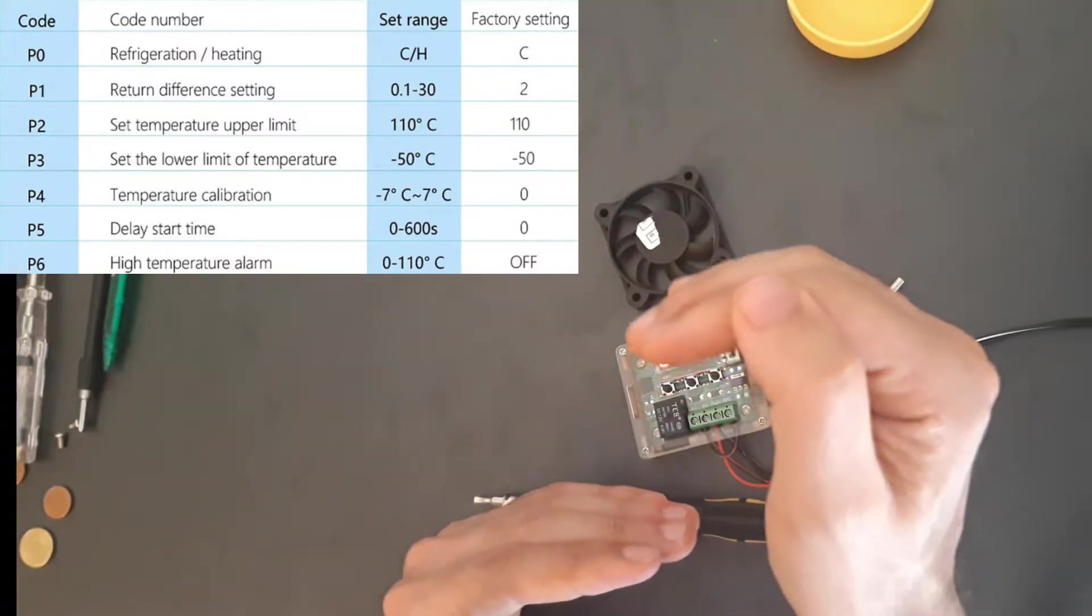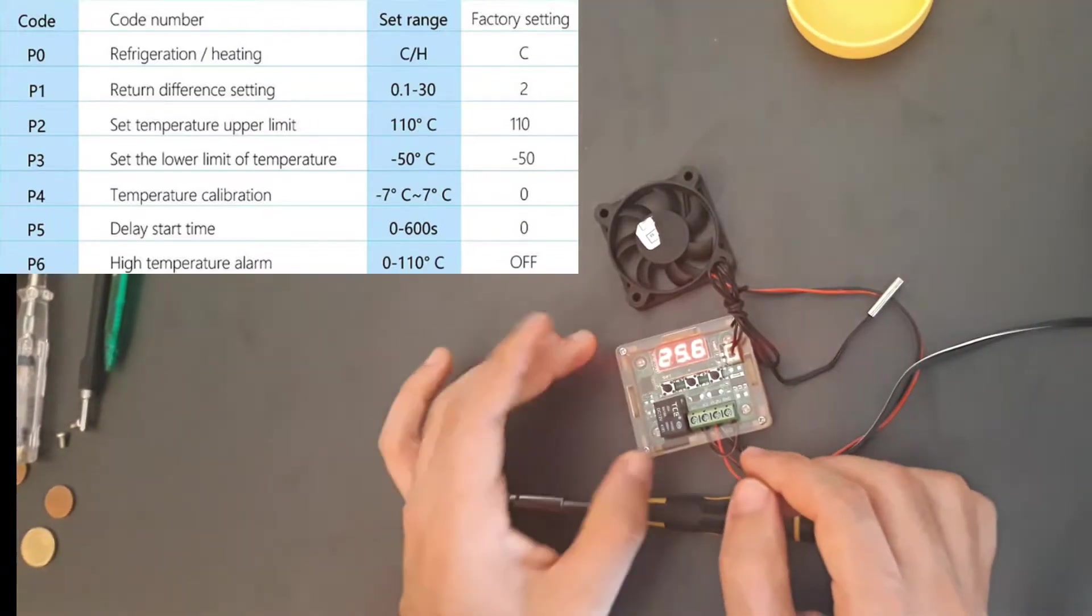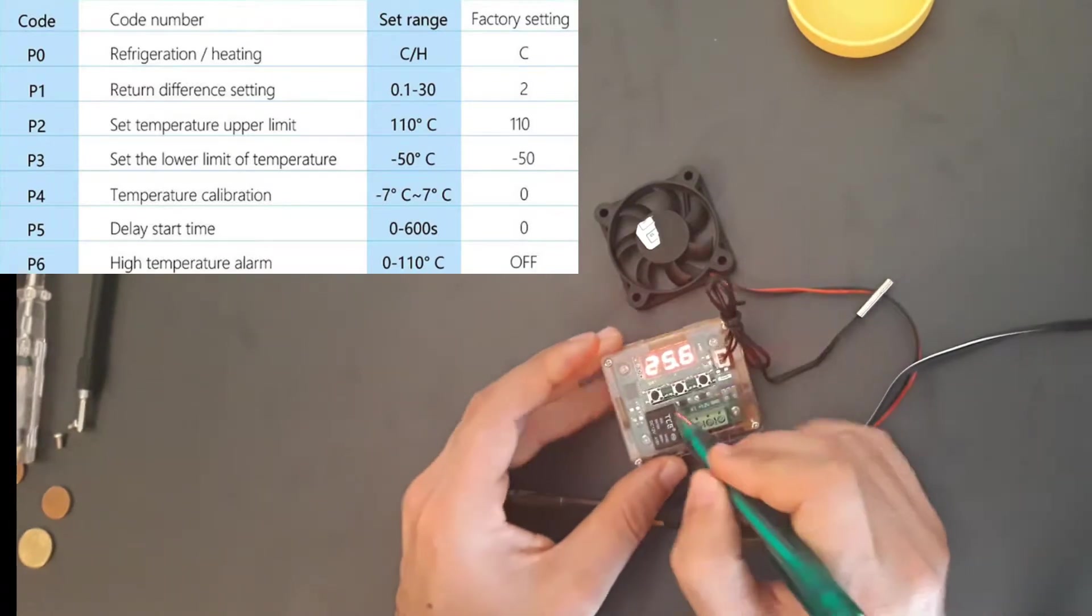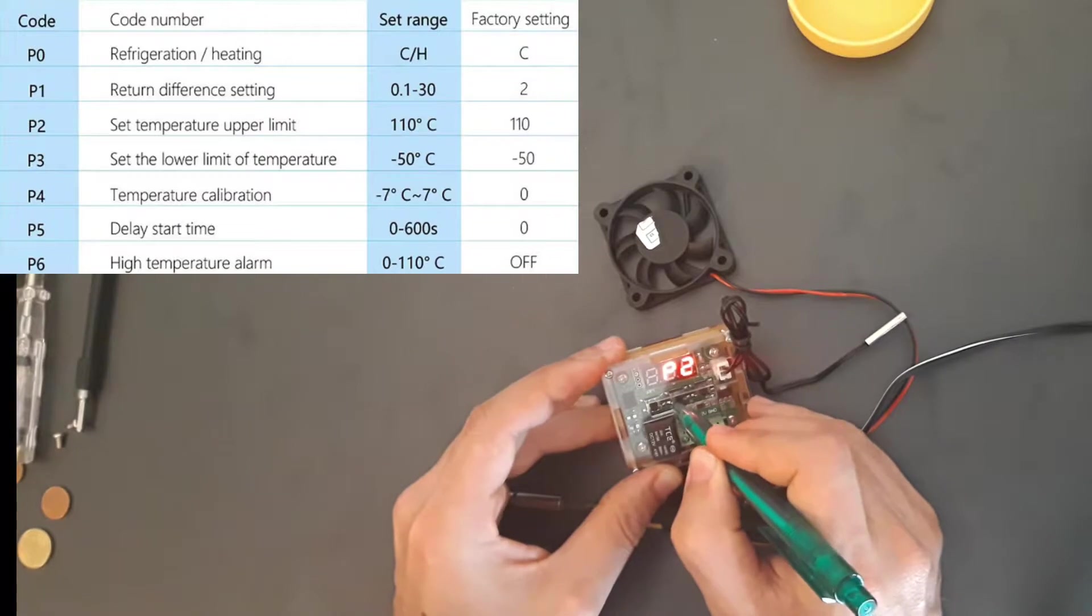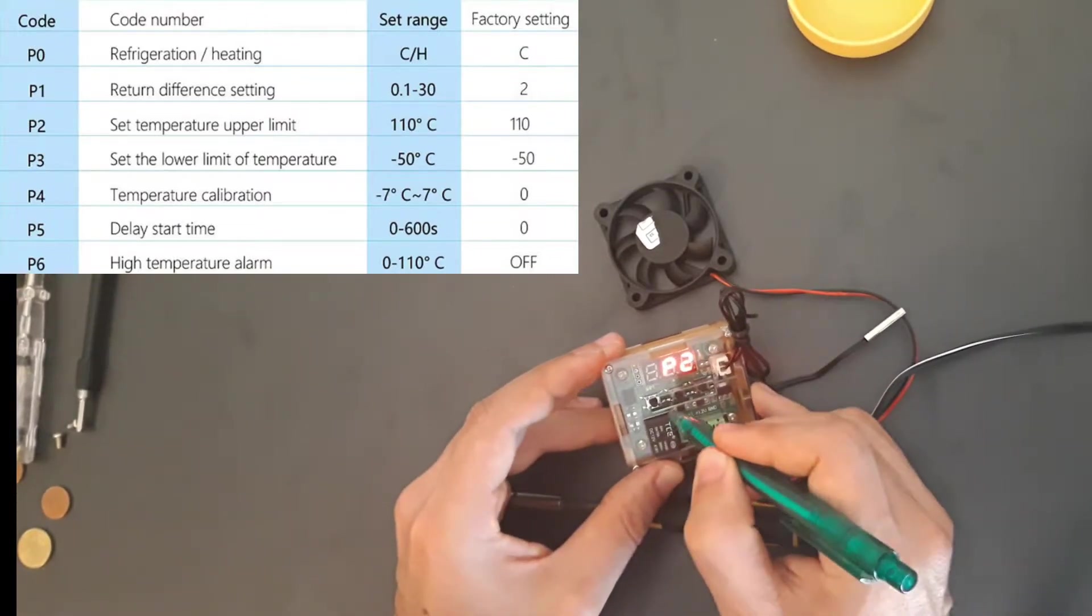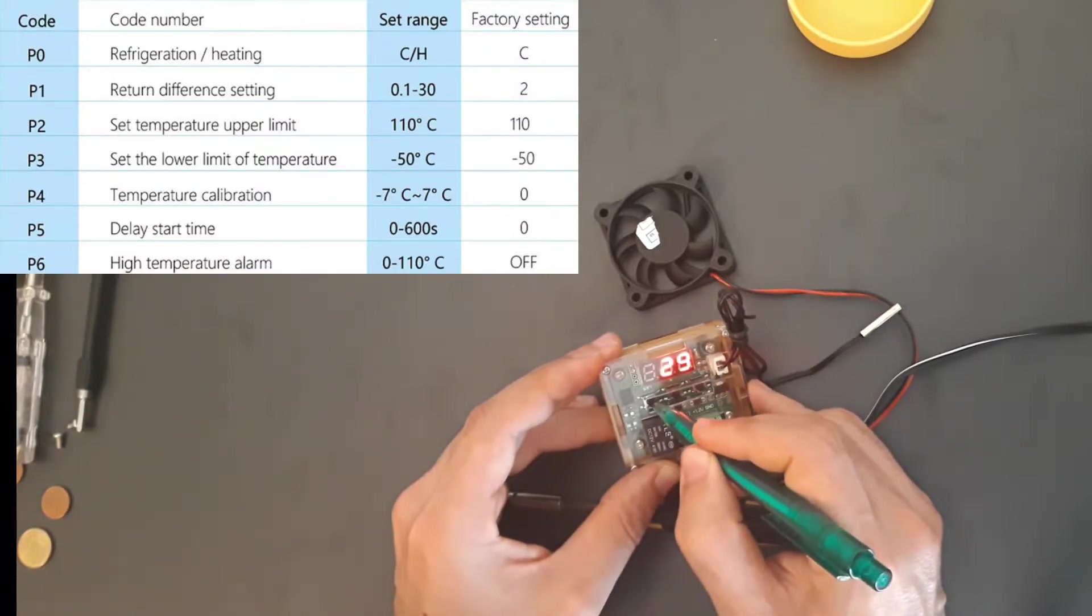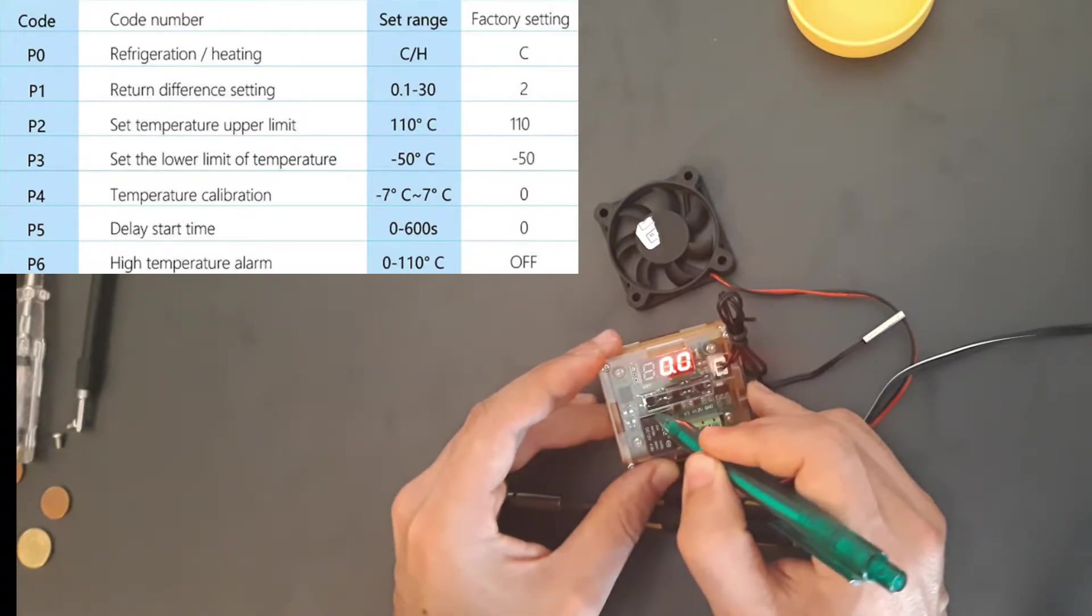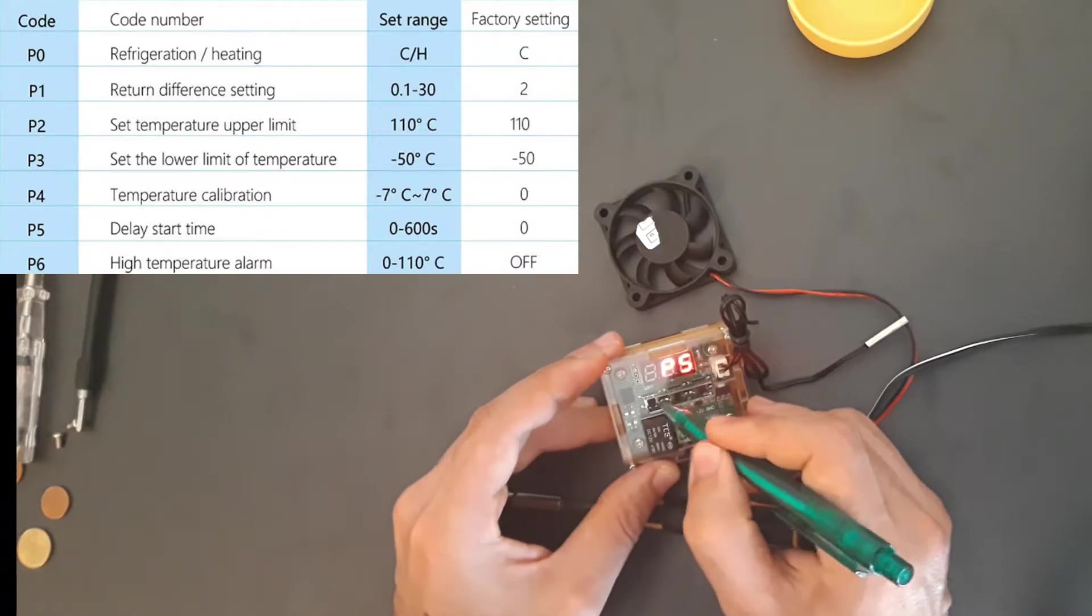It's a bit like this, the return. P2 is the higher temperature. P2 high temperature, I have this one set to 39. P3 lower, 29 degrees. P4, this is the temperature calibration. If you knew the temperature was a bit offset, you could set it.